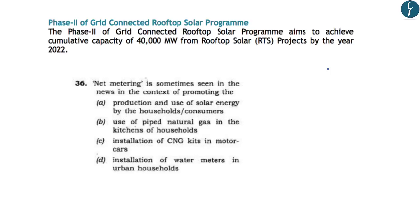The second scheme is the Grid Connected Rooftop Solar Program. Phase two of this program has received approval from the Cabinet Committee of Economic Affairs. The aim is to achieve a cumulative capacity of 40,000 megawatts from rooftop solar projects by 2022. Rooftop solar plants are installed on residential houses. If a house produces more electricity than required, it can be transferred to the grid connected to DISCOMs. If the solar plant is insufficient, it draws energy from the DISCOM grid.